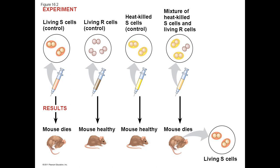British medical officer Frederick Griffith performed an experiment in 1928 that involved mice and two strains of Streptococcus pneumoniae, one pathogenic and one that was harmless. His experiment showed that when the pathogenic strain was killed and its remains were mixed with living cells of the harmless strain, some of the living cells had become pathogenic and this change was inherited. Griffith called this phenomenon transformation, but it was only later confirmed that transformation involved the uptake of naked DNA from the environment.